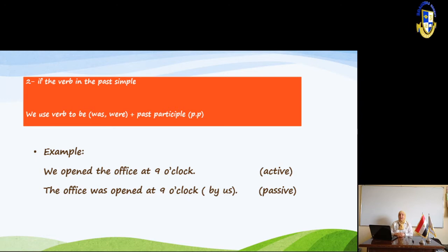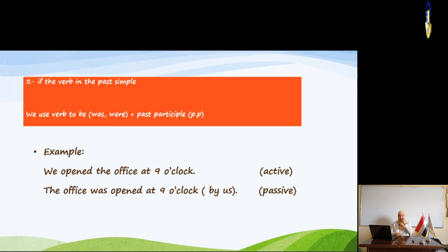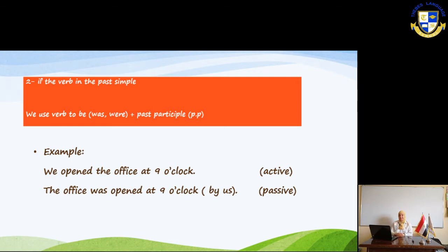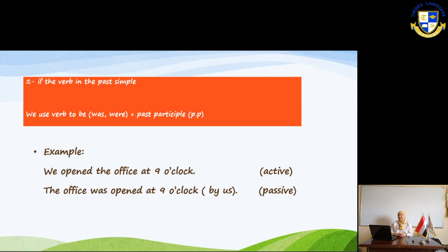If the verb is in the past simple, we use 'was' or 'were' plus the past participle of the verb. For example: 'We opened the office at nine o'clock.' We start with the object: 'The office was opened at nine o'clock by us.' You can say 'by us' or leave it out. The most important thing in the passive is the object.